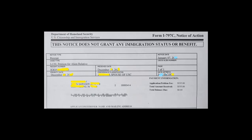The form also shows the date of birth of the petitioner right here. For payment information, the fee is usually $535. If you paid more, they will show you the balance. In this case, the total amount received is $535 and the balance is zero.